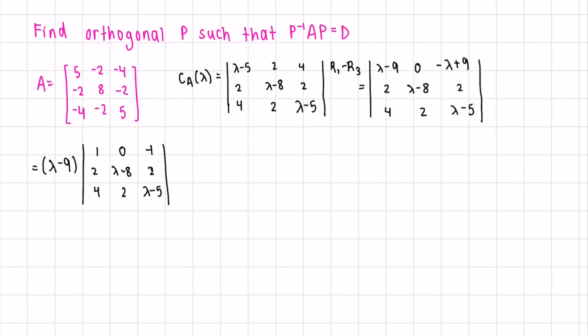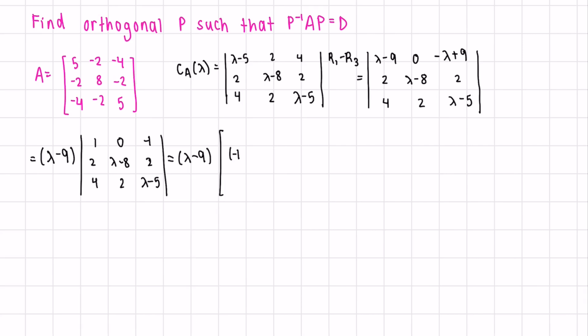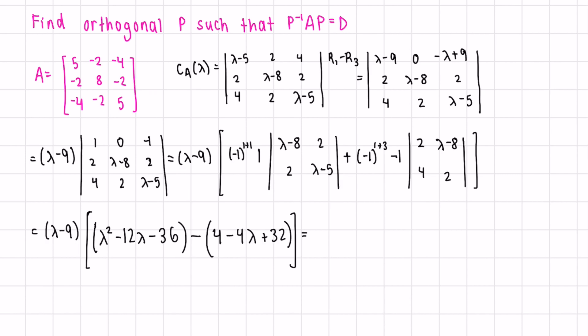First, we have negative one to the exponent. We're in our first row, first column, so one plus one, times one, times the matrix, plus negative one to the exponent, first row, third column. Next, we can compute this. We have lambda minus eight times lambda minus five minus four minus two times two minus four times lambda minus eight. Now let's collect like terms.